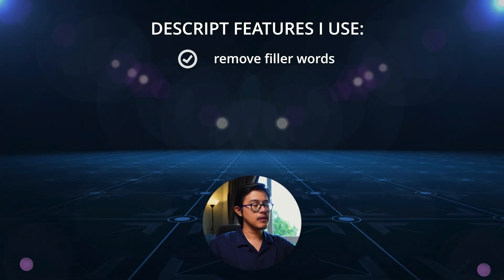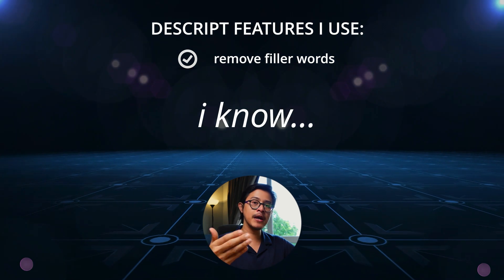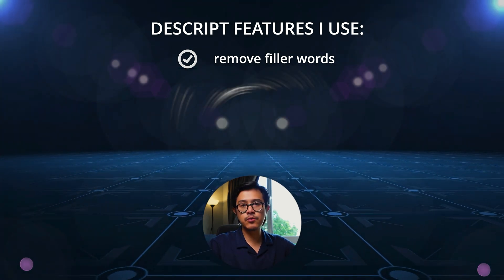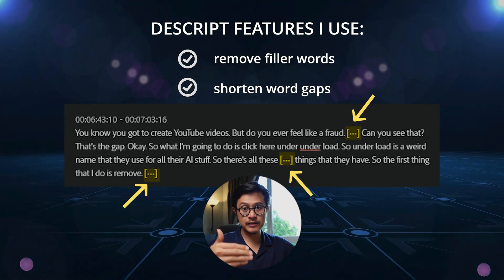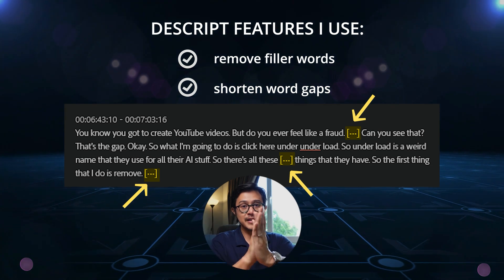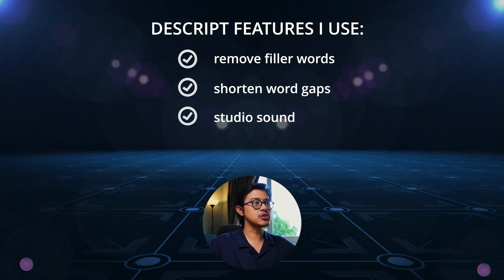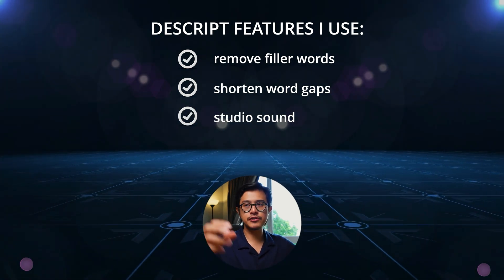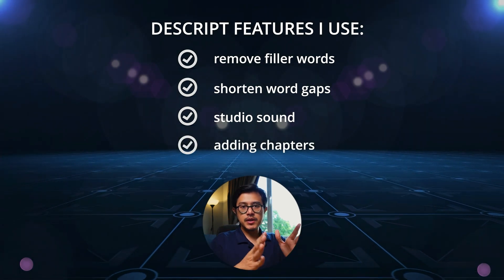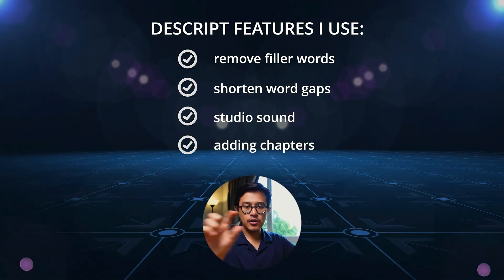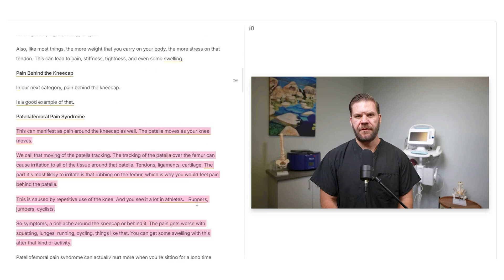The first feature is remove filler words — that removes all the ums, ahs, and that kind of stuff automatically. The second is shorten word gaps, which cuts out the pauses between sentences that usually take so much time to cut manually one by one. Studio sound is great if you don't have a fancy mic or there's background noise — it can fix that and make you sound like you have an expensive mic. Number four is adding chapters. The main appeal of Descript is you edit the video not based on a timeline but based on text, like editing a Google doc — remove a word and it automatically cuts out the video footage.